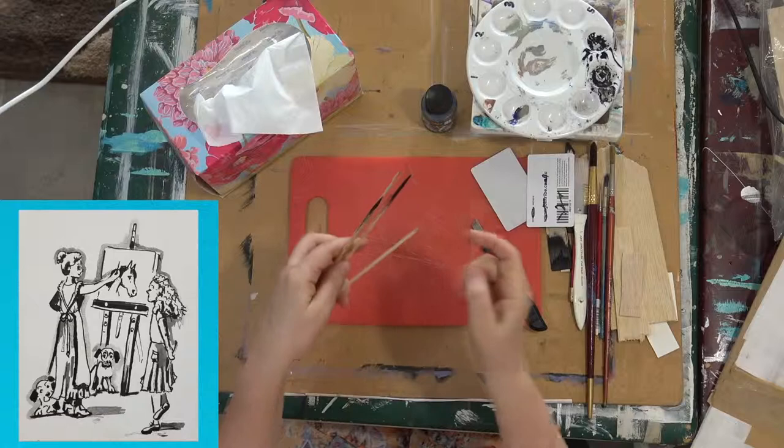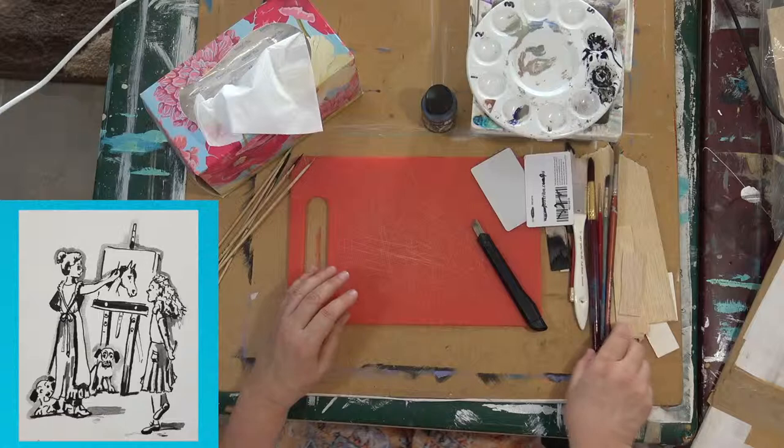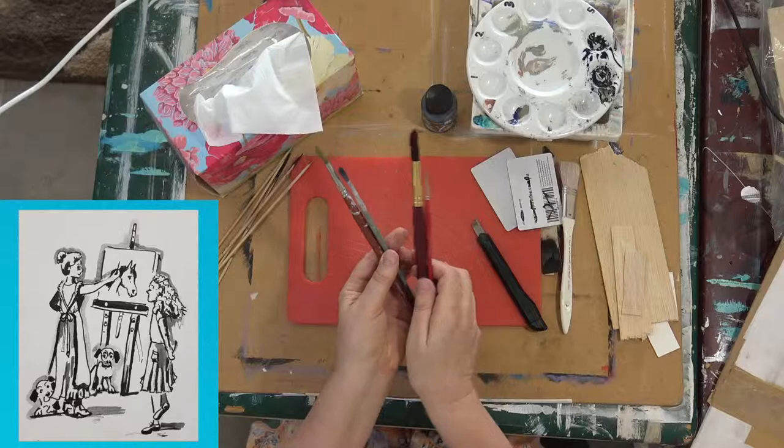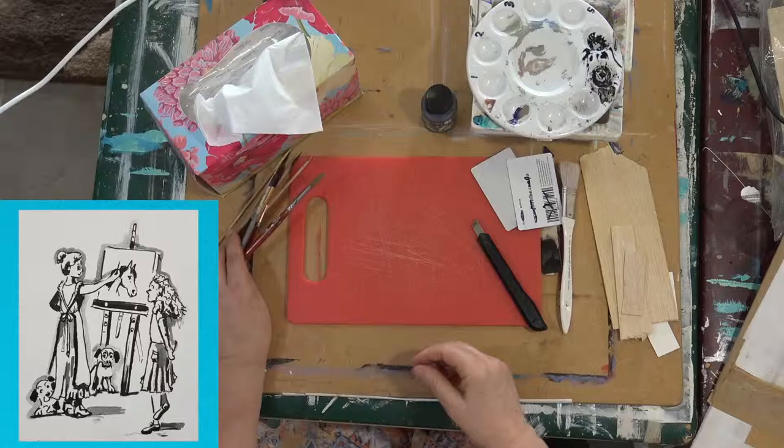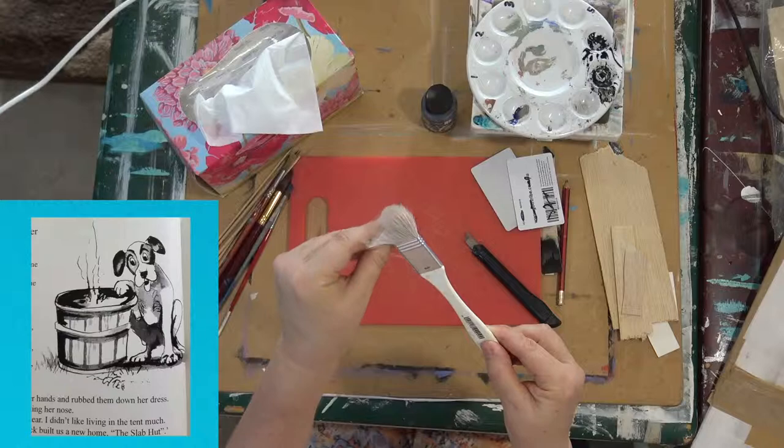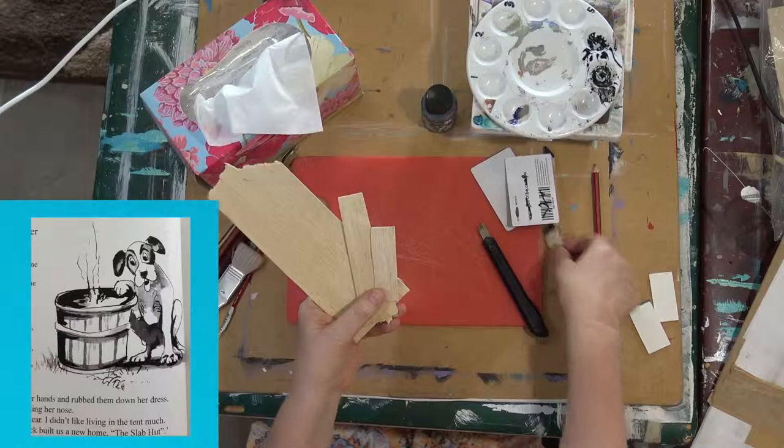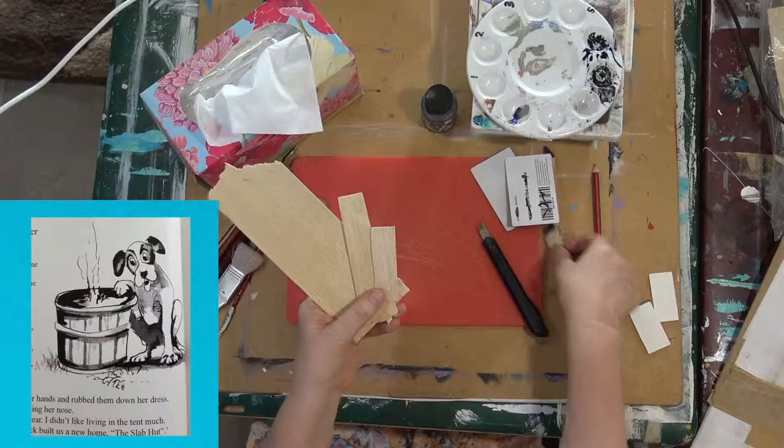Also I use brushes, various watercolor brushes. Sometimes I use a nice soft sable brush for putting in washes. I also use balsa wood. Now I cut the balsa wood into little shapes, things like this.